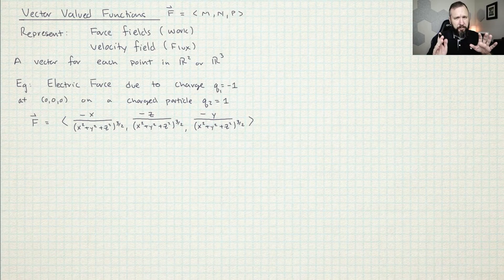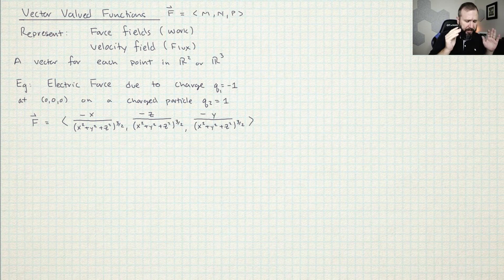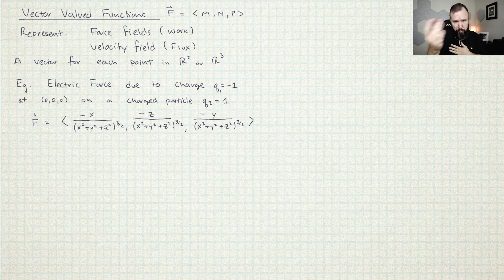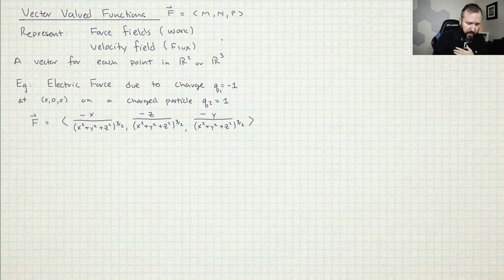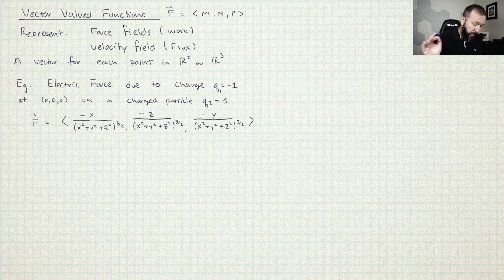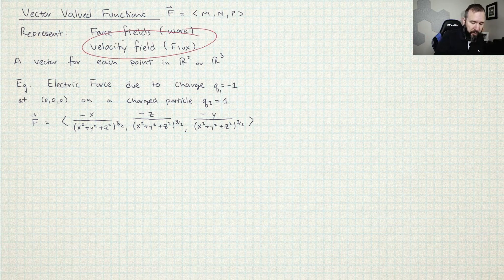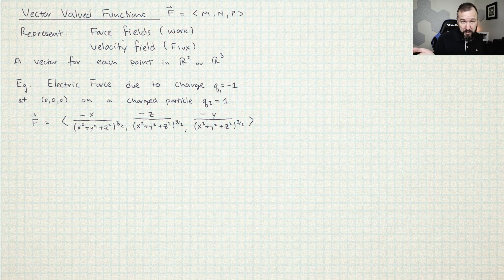Vector-valued functions are exactly what they sound like — it's a function where the value of the function is a vector. So you plug something in and the output is a vector. If you're solving a problem about work, your vector-valued function is going to represent force. And if you're solving a problem about flux, the vector-valued function is going to represent velocity. Both of those things are vectors.